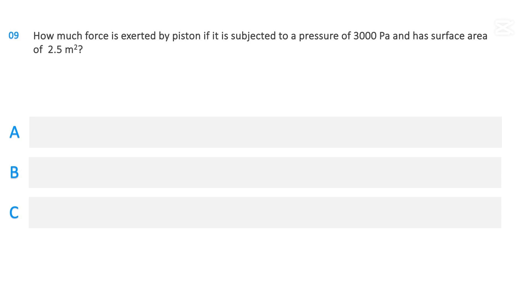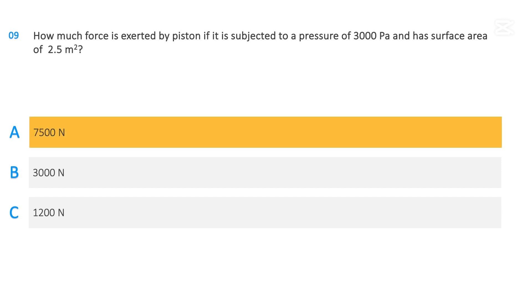How much force is exerted by a piston if it is subjected to a pressure of 3000 pascals and has a surface area of 2.5 meters squared? 7,500 newtons; 3,000 newtons; or 1,200 newtons. The correct answer is 7,500 newtons.